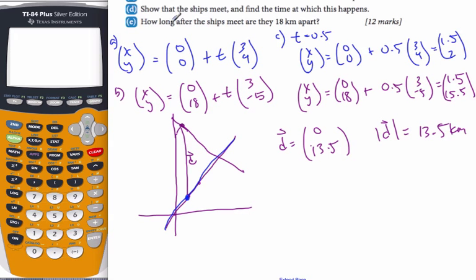Now D part says, show that the ships meet and find the time at which this happens. So this is where they meet. It's the intersection point. If I want to find the intersection point, that means I want to find it when the two lines are equal. So I'm going to make the x value equal to the x value. So 3t of 0 plus 3t has to equal to 0 plus 3t. So I get 3t is equal to 3t.